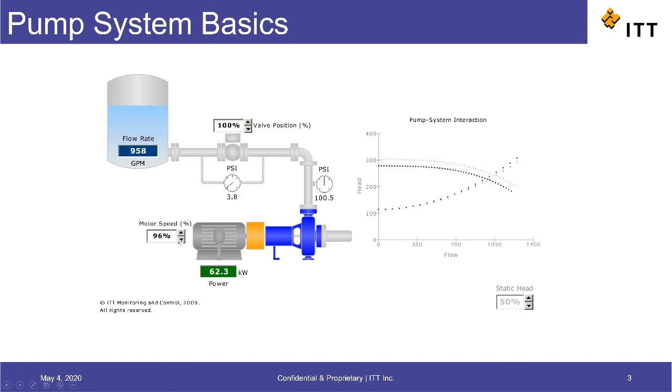What happens is we leave the system curve in its original shape with the discharge valve fully open. And as the motor speed and therefore the pump speed come down, we're shifting the pump curve down until it intersects with the system curve close to our desired flow rate.